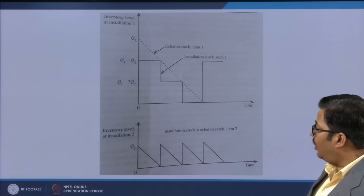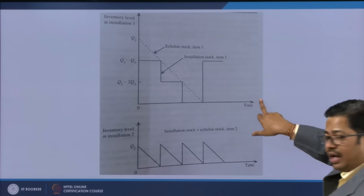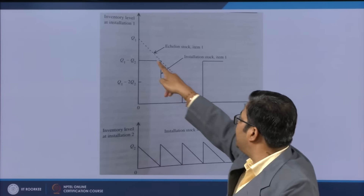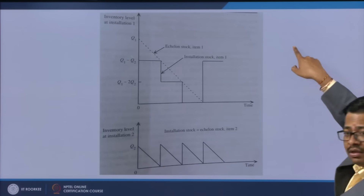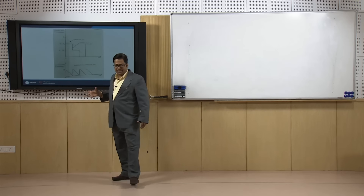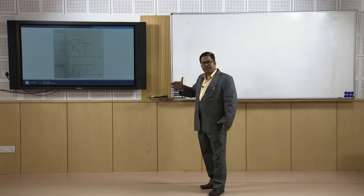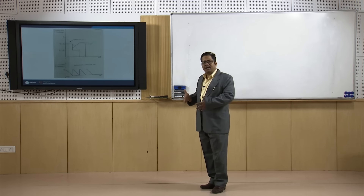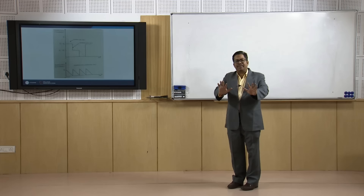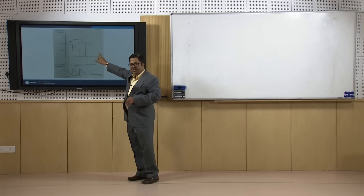Now at stage 1 also, we have vertical lines as replenishment lines and dotted lines as the consumption lines. Therefore, we have a saw-teeth pattern at installation 1 as well. Because of this saw-teeth pattern at installation 1, we can apply the EOQ model at installation 1 also. So now the agreement is made that we can apply the EOQ model at both installation 1 and installation 2.